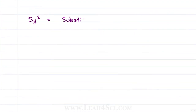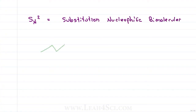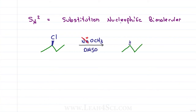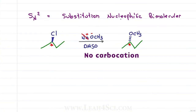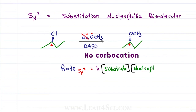SN2 stands for substitution nucleophilic bimolecular. If we start with a reactant that has a leaving group — for example chlorine — and react it with a strong nucleophile in the presence of a polar aprotic solvent, the product will show the nucleophile having replaced the leaving group. If we have a chiral starting molecule, the chiral product will show an inversion of configuration. Since we're reacting with a strong negative nucleophile, there is no carbocation — it is a very fast reaction, and the rate equals k times the substrate times the nucleophile.